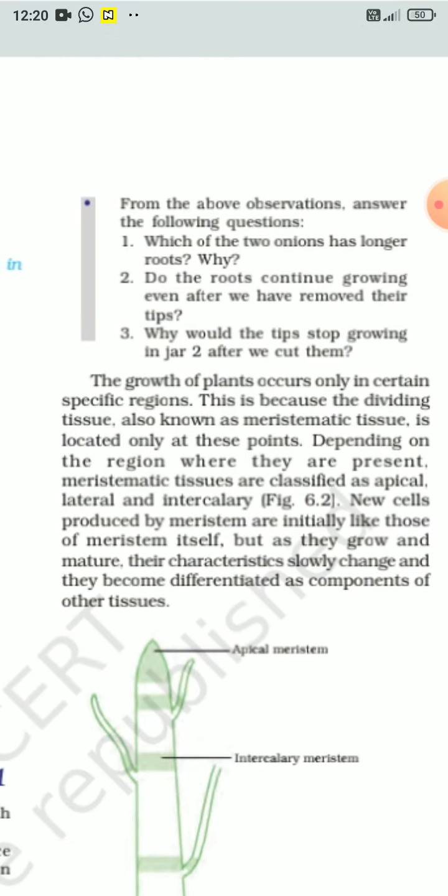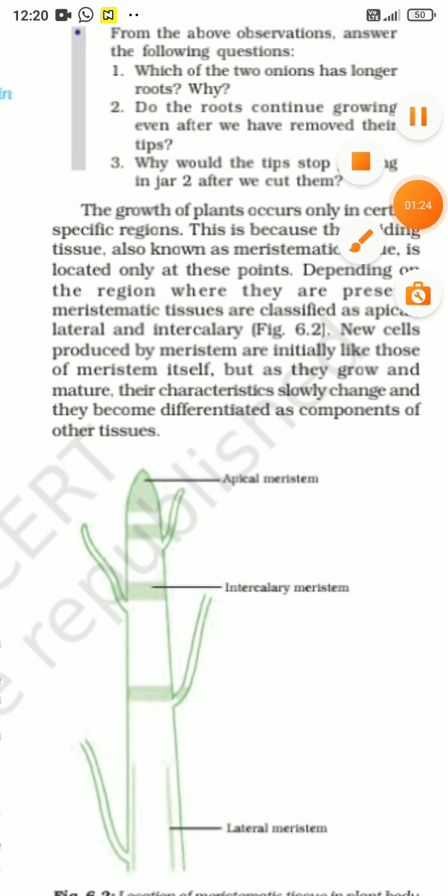This is because of the dividing tissue. Meristematic tissue is also known as dividing tissue. They are located in a specific area, like the apical meristematic tissue. These are growing roots and stem.